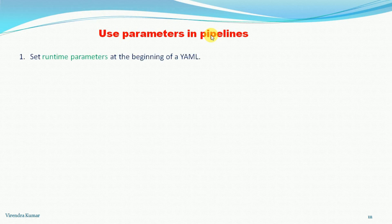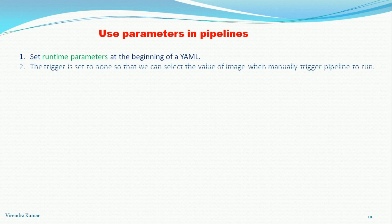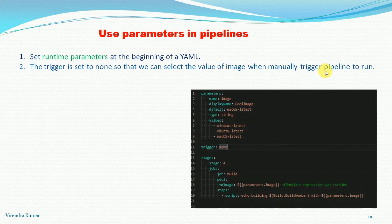For that, first what we need to do is set some runtime parameters at the beginning of the YAML pipelines. If you don't know how to set the runtime parameters, you can watch the previous video session. Once you have defined the runtime parameters, the trigger is set to none, so that we can select the value of the image when manually triggering pipelines to run. As you can see in this example, the parameter is defined and the trigger is none.